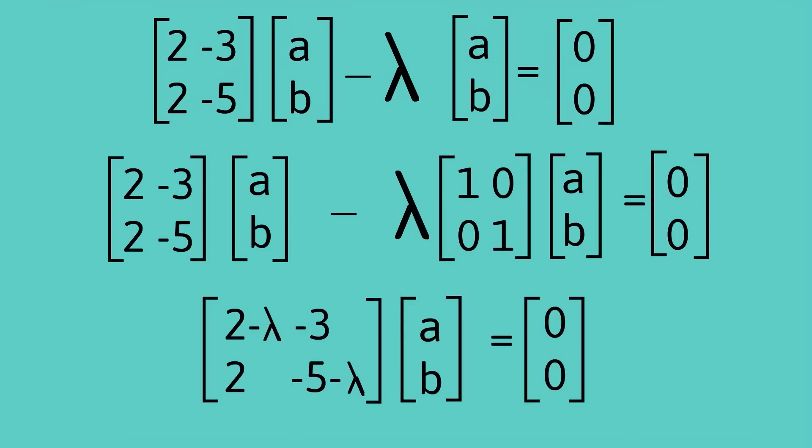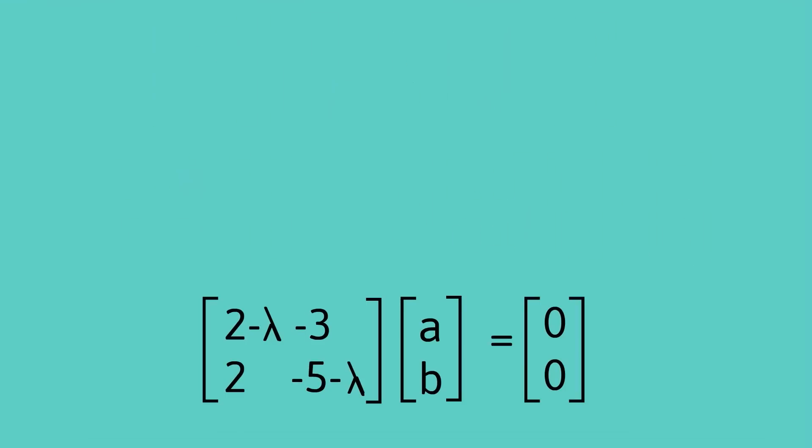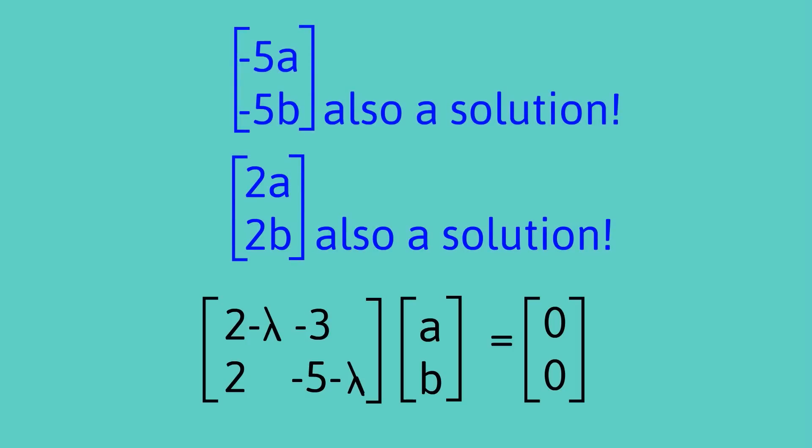And now there's a little bit of a tricky step which you may need to do a little bit of work on to really get comfortable with. I can explain it this way: whatever solution we come up with, this [a,b], it's not going to be unique because if [a,b] is a solution, well so is [2a,2b] or the vector negative [5a, 5b], they're all going to be solutions.